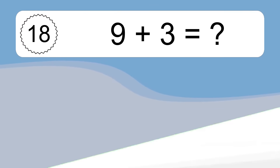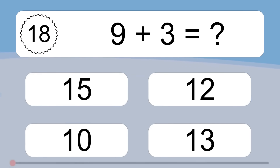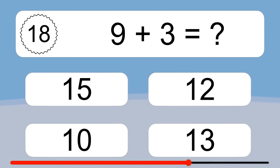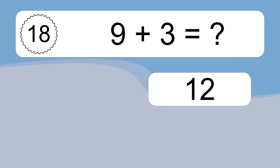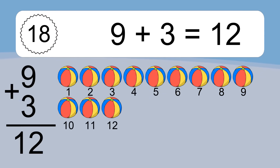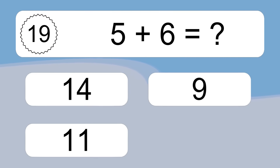9 plus 3 equals what? 9 plus 3 equals 12. Let's count it: 1, 2, 3, 4, 5, 6, 7, 8, 9, 10, 11, 12.